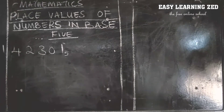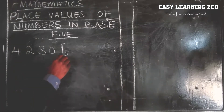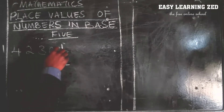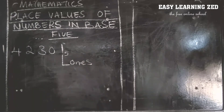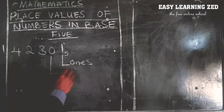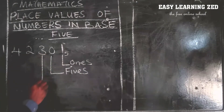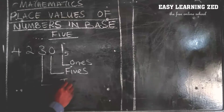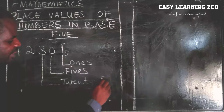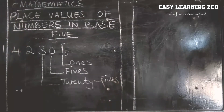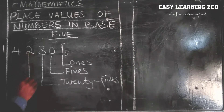In base five, this one has the place value of ones. In base five, this zero has the place value of five. In base five, this three has the place value of twenty-five. In base five, this two has the place value of...